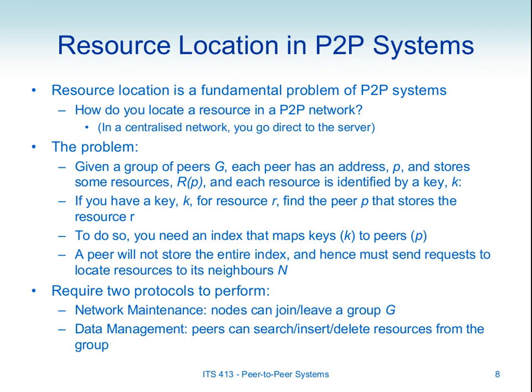Once you find which peers have that resource, you can contact them and download or access that resource. If we think of resources as files and keys as file names, P1 wants to find file K3, they know the file name, and they need to find the peers that store that file. That's the resource location problem, and it involves using some form of an index, where an index maps keys to peers.